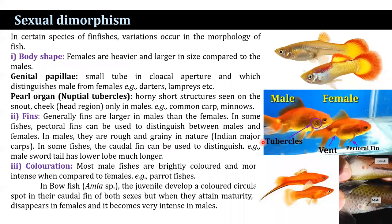Body shape: females have a heavier body in comparison to the male, because of their ovary — you can see the female body is heavier. Then there is the genital papilla, which is a small tube at the cloacal aperture that distinguishes the male from the female, and that is developed in different kinds of aquarium fishes.